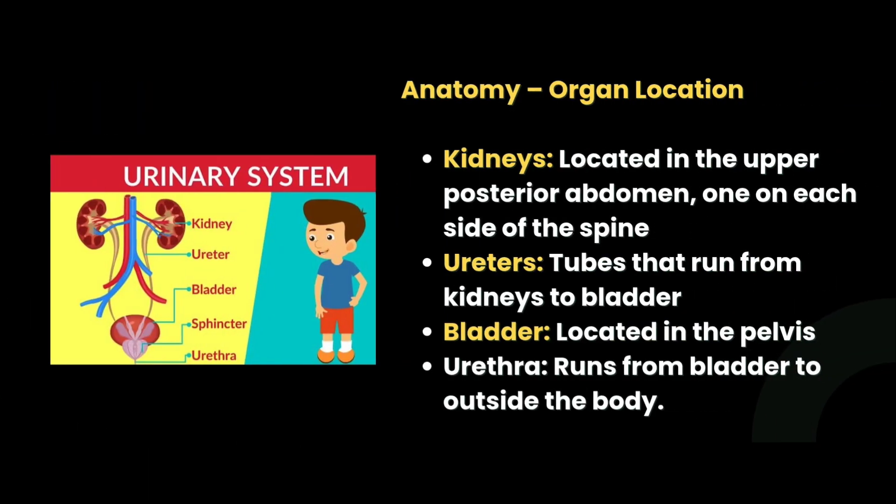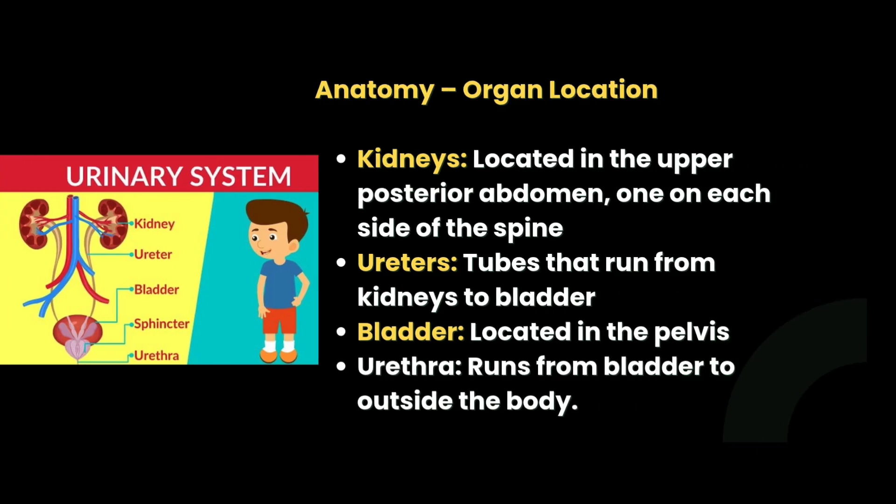Now we can see the organ locations. The kidney is located in the upper posterior abdomen, one on each side of the spine. The ureter is a tube that runs from the kidney to the bladder. The bladder is located in the pelvis. The urethra runs from the bladder to outside of the body.